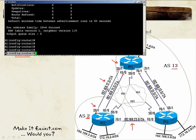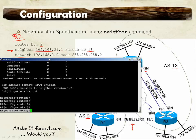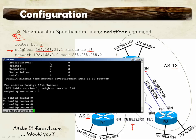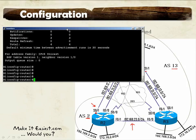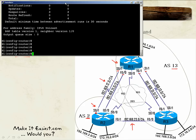First, you specify the 'network' keyword at the routing process level, then you specify an IP address, then the 'mask' keyword, and then the subnet mask — not the wildcard mask. In BGP we use the subnet mask, not the wildcard mask.